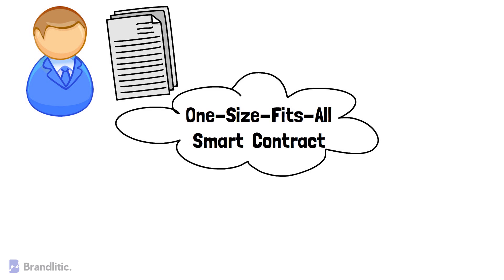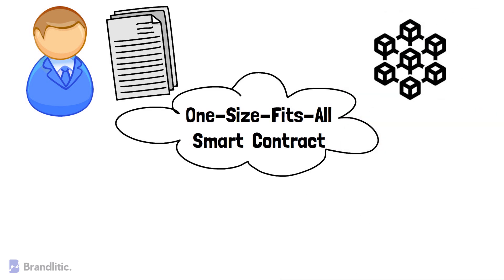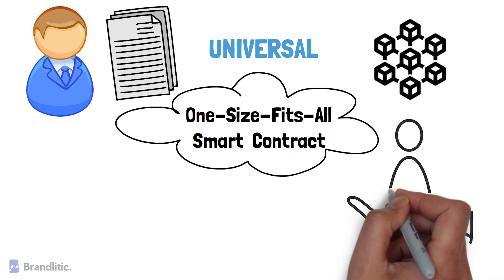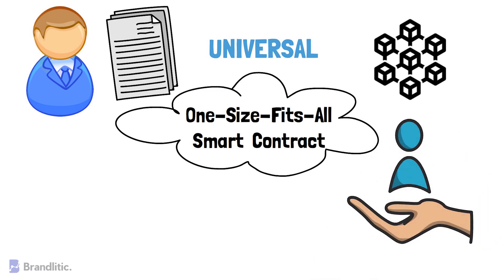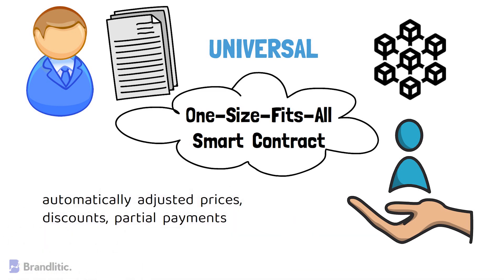With this universal agreement, anyone on the blockchain network can rent Amar's apartment by following the algorithm we discussed. The potential guest transfers the rent payment, gets the address and the apartment code, and Amar gets his payment if everything works according to the contract terms. Moreover, if we plan well, a smart contract can be even more universal — we could program it to be used not only by Amar, but by anyone who wants to rent out their flat. Smart contracts can also contain more specific conditions such as automatically adjusted prices, discounts, partial payments, and nearly any other imaginable option.